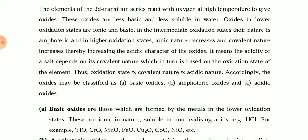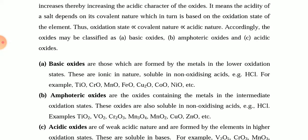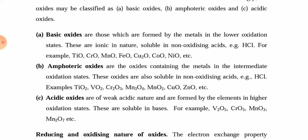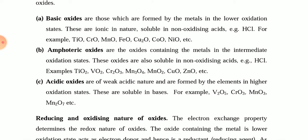Oxides can be classified as basic oxides, amphoteric oxides, and acidic oxides. Examples of basic oxides include TiO, CrO, MnO, FeO, CuO, and NiO. Amphoteric oxides include TiO₂, VO₂, Cr₂O₃, and MnO₂. The acidic oxides are V₂O₅, CrO₃, Mn₂O₇, and Mn₂O₇.